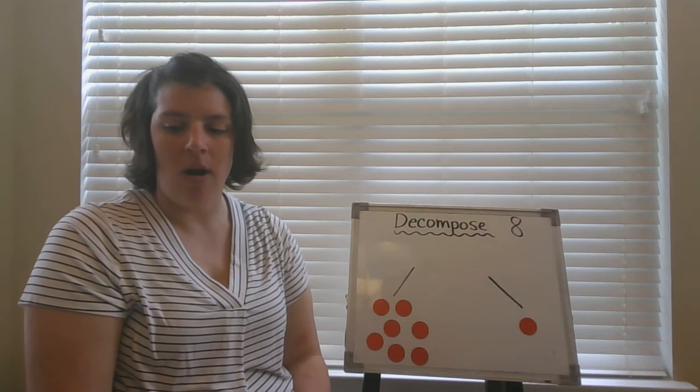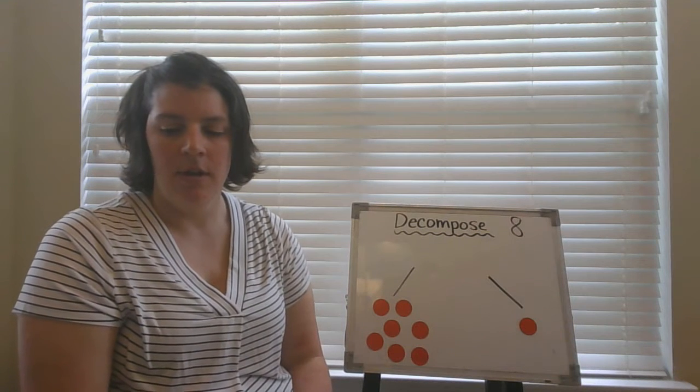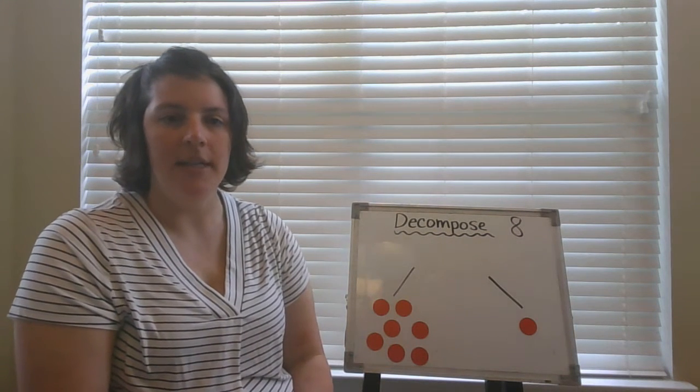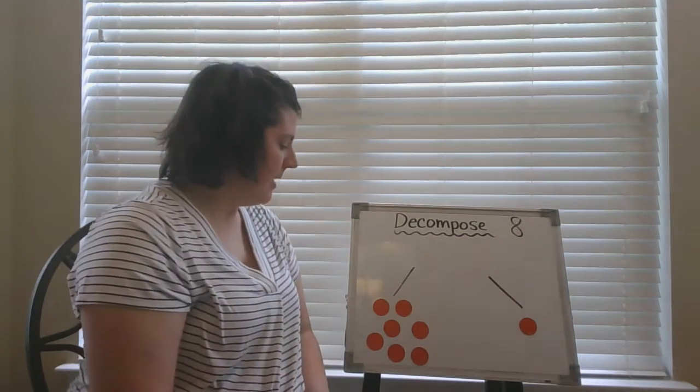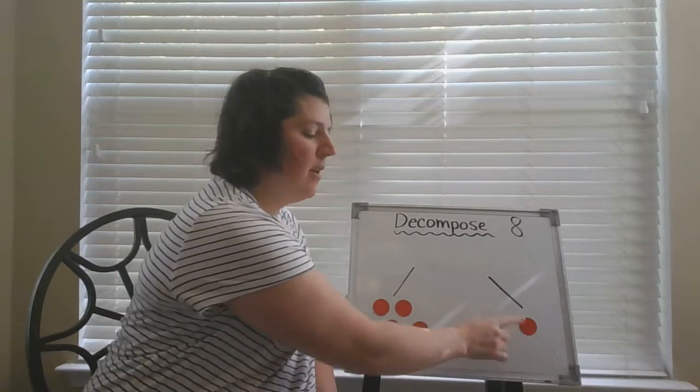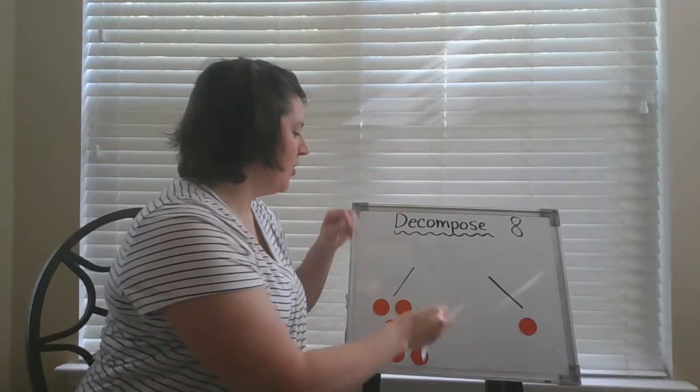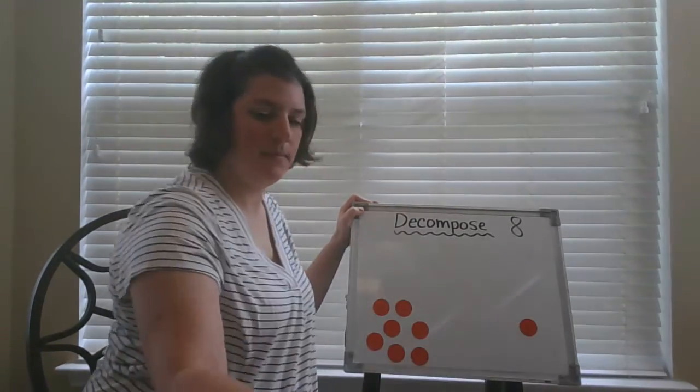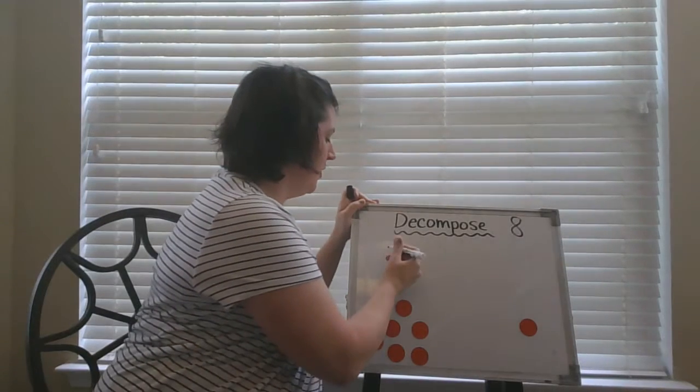That means I could draw or write a picture or words to show ways to make eight. Just like when I said it, eight is the same as seven and one. I could draw a picture that shows that. I could do it like this.